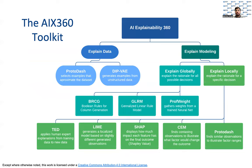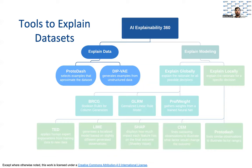This is our decision tree illustrating all the tools currently included in the library. On the left are two tools used for explaining data. Protodash is for tabular data — the kind of data that you might imagine represented in a spreadsheet. GIPVAE is for unstructured data, like images. These tools select a handful of examples from the entire dataset that help illustrate all of the information contained in the dataset. We will see them in action later during the case study.